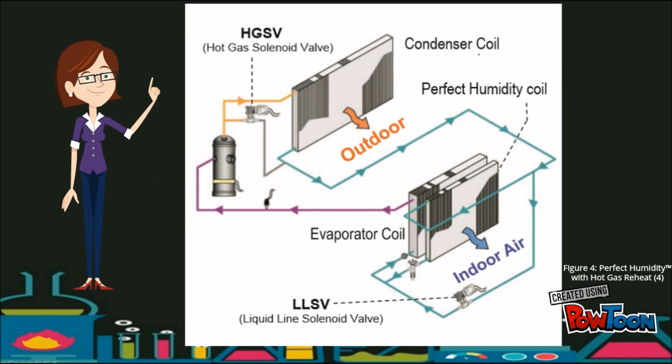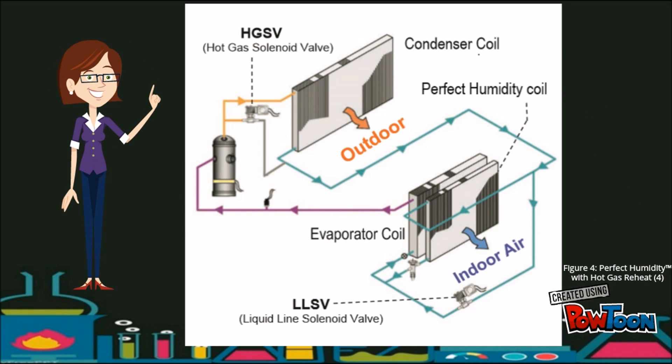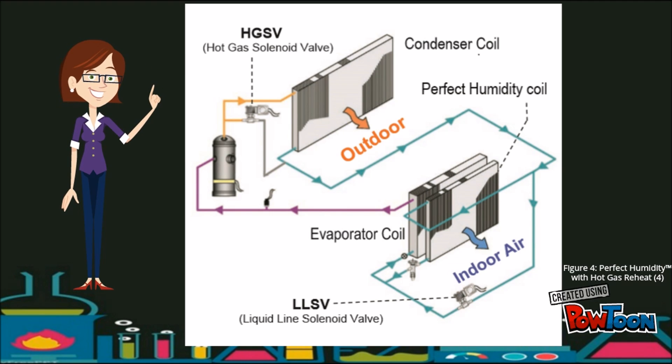When there is a call for dehumidification, a portion of the hot gas from the compressor bypasses the condenser coil and is fed into the liquid line.